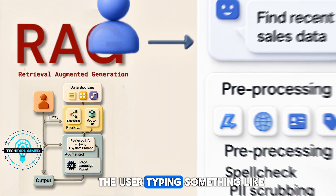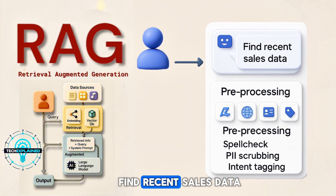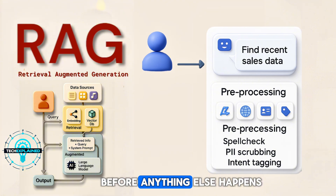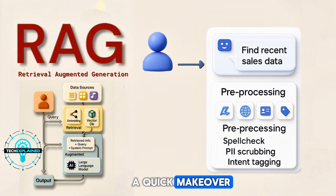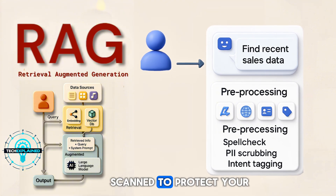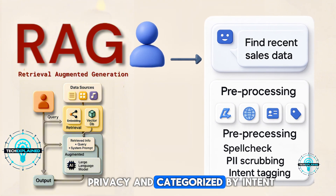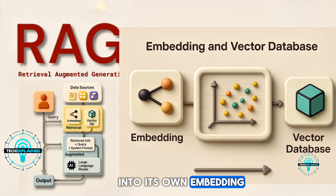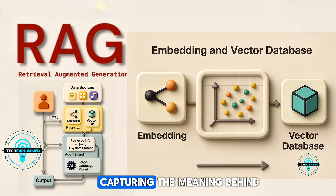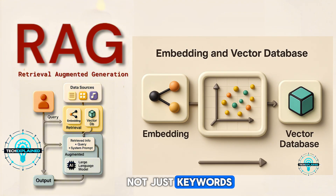Now let's say you're the user typing something like 'find recent sales data.' Before anything else happens, your query goes through a quick makeover. It's spell-checked, scanned to protect your privacy, and categorized by intent. Then it gets turned into its own embedding, capturing the meaning behind your question — not just keywords.